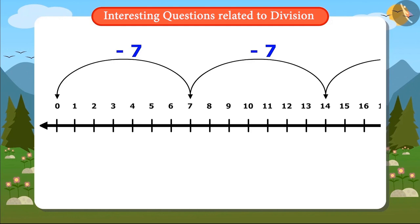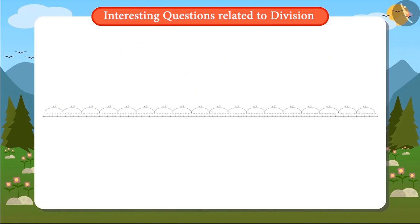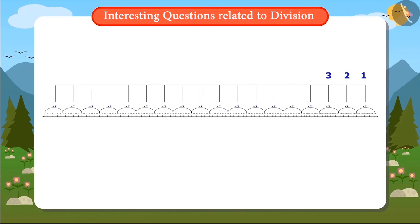Now I just want to see how many times 7 had to be reduced to reach 0. 1, 2, 3, 4, 5, 6, 7, 8, 9, 10, 11, 12, 13, 14, 15, 16, 17, 18.